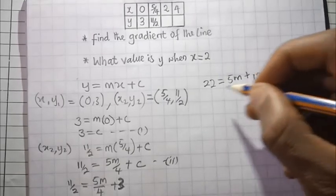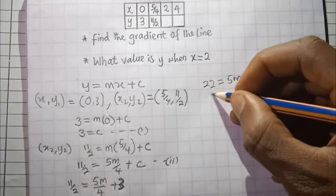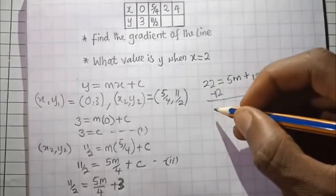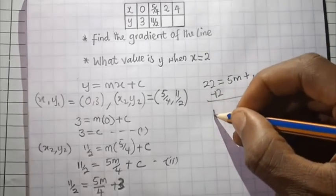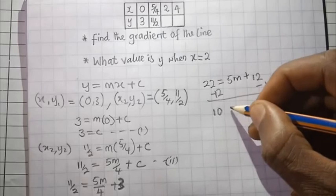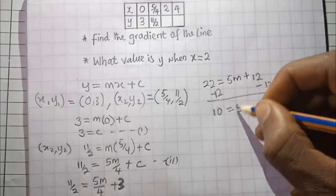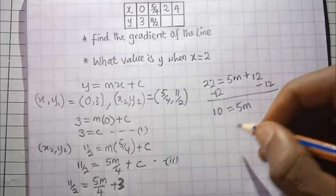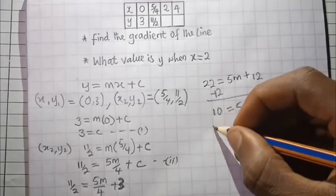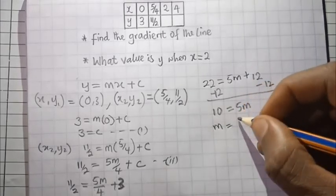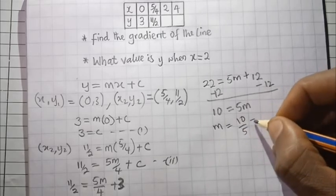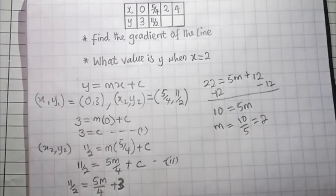Subtract 12 from both sides: 22 minus 12 gives 10, equal to 5m. Therefore m equals 10 divided by 5, which is equal to 2. So our slope is equal to 2.